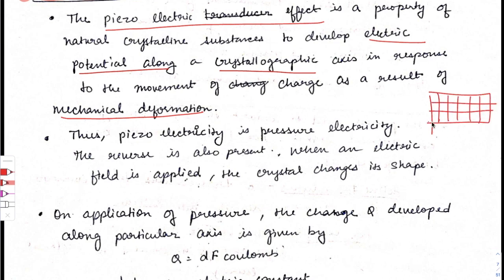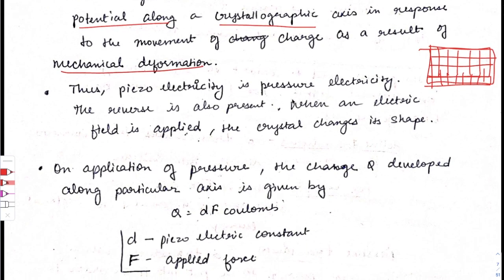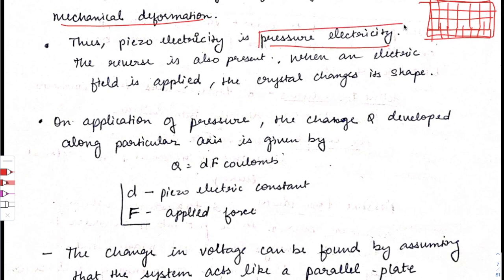When mechanical deformation takes place in a crystal structure where atoms are arranged in a proper manner, an electric potential is generated along the crystal. This generation of electrical potential is called the piezoelectric effect — piezoelectricity means pressure electricity. The reverse is also true: when an electrical field is applied, the crystal changes its shape.